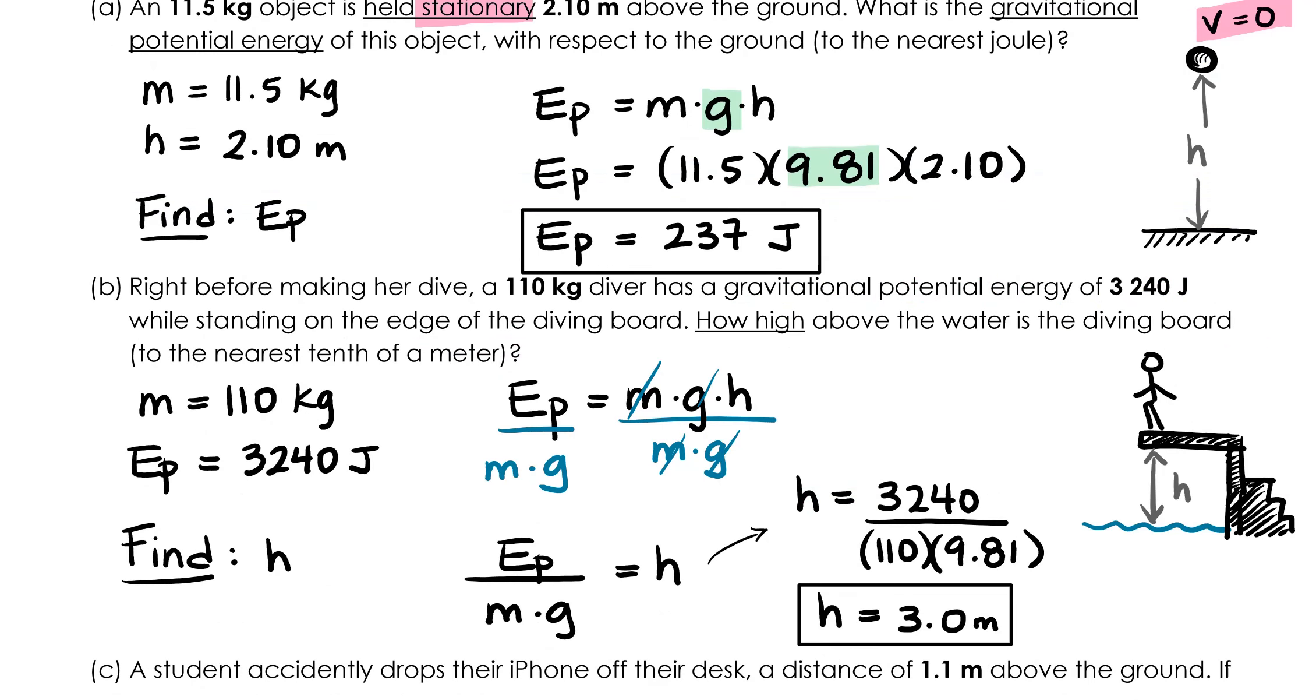In part B, a diver standing at the top of a diving board has gravitational potential energy because they're above the surface of the water and they could fall. In fact, they have 3,240 joules of gravitational potential energy. In this question, we're supposed to find how high above the water they are, or H. In order to do that, we have to take our formula for gravitational potential energy and algebraically rearrange it to isolate H. We get H equals EP divided by M times G. Plugging in our numbers, I got that the diving board is 3 meters above the water.